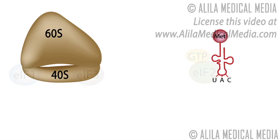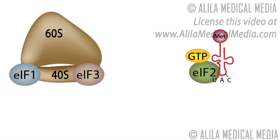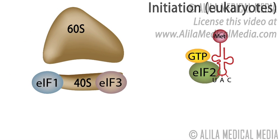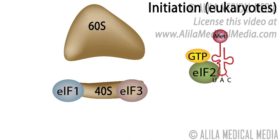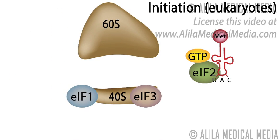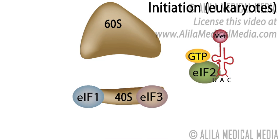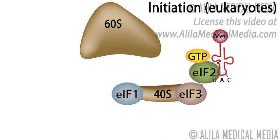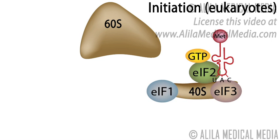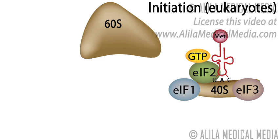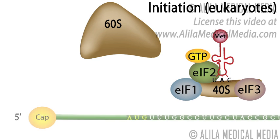Steps of the Translation Process. Initiation: the small ribosomal subunit binds to the initiator tRNA carrying the initiator amino acid methionine.